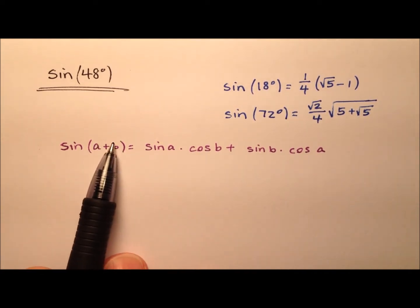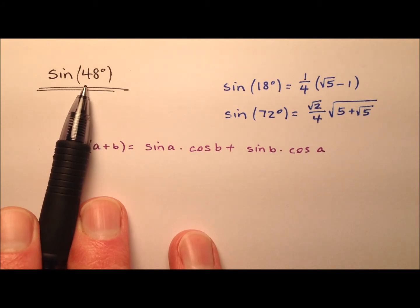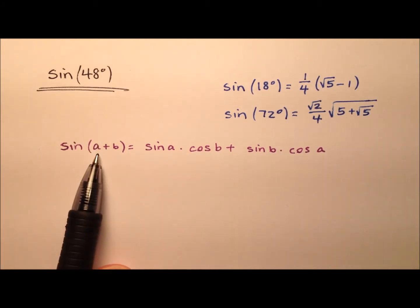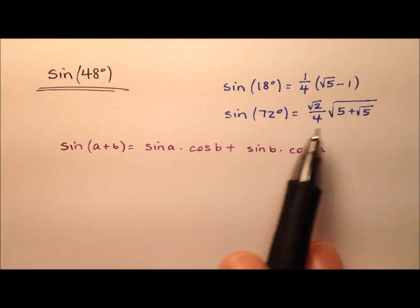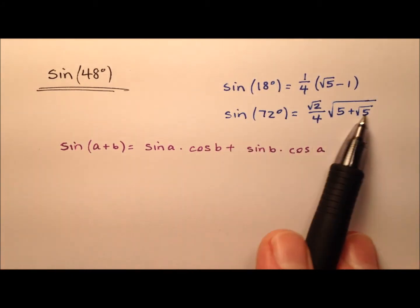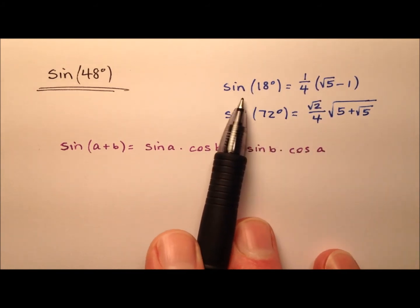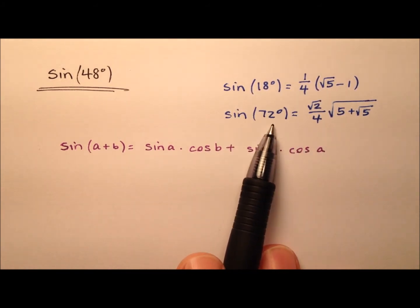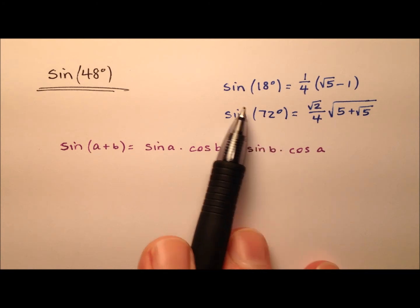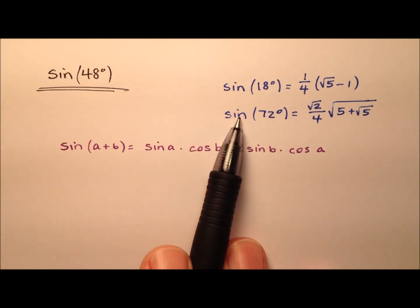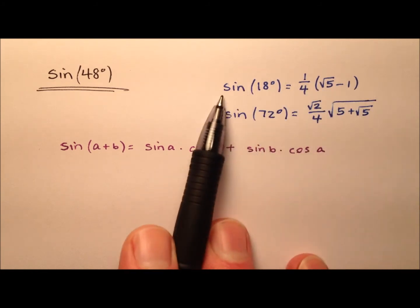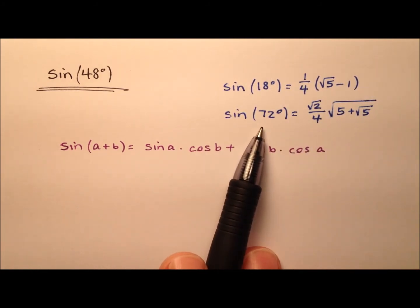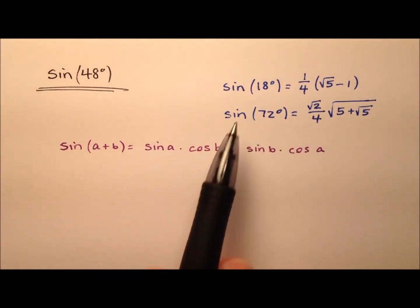In our case, a and b are going to add up to 48 degrees, and we'll use two nice angles. Two other values we're going to incorporate are the sine of 18 degrees and the sine of 72 degrees, both of which I have found from scratch in other videos, linked in the description.